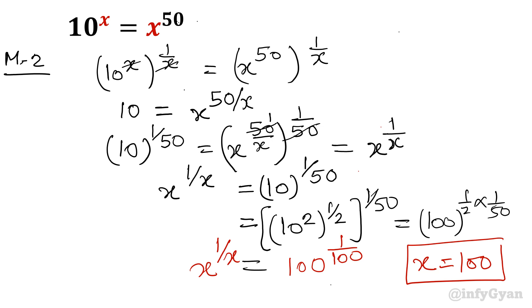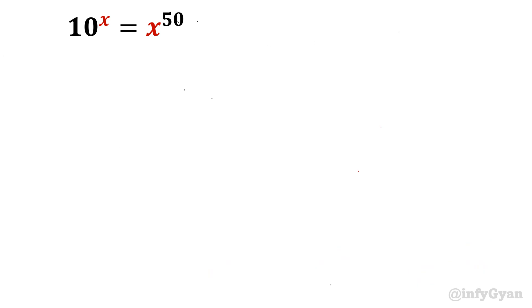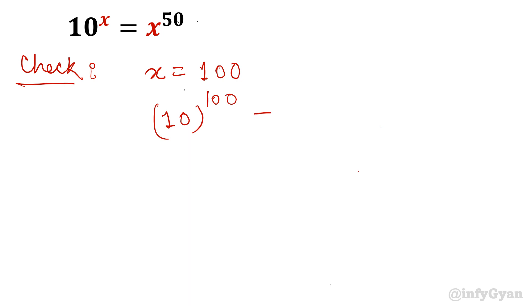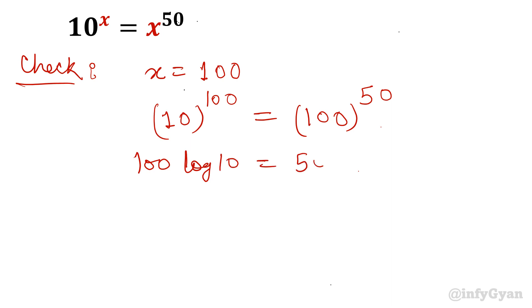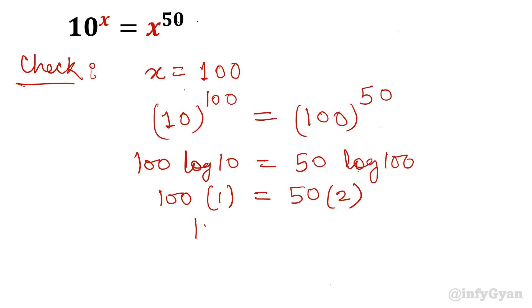Now let us verify this value. x is equal to 100. So let us check: 10 raised to the power 100 equals 100 raised to the power 50. Take log both sides: 100 log 10 is equal to 50 log 100. Put the value of log 10 as 1, so left side is 100. And 50 log 100 is 50 times 2, which is 100. So 100 equals 100 — that means it is true.